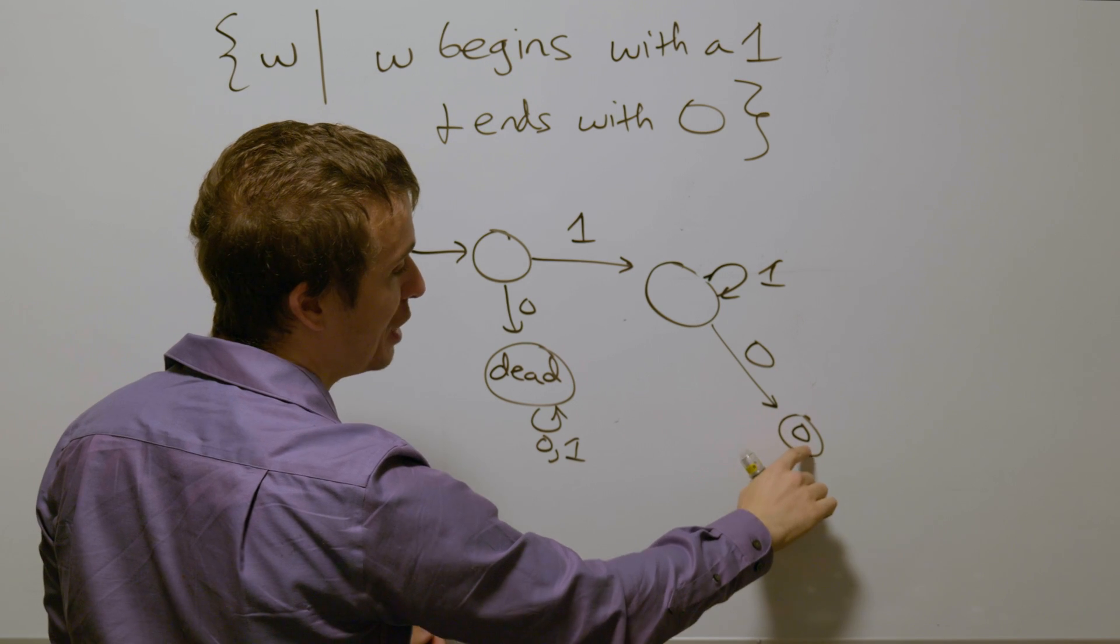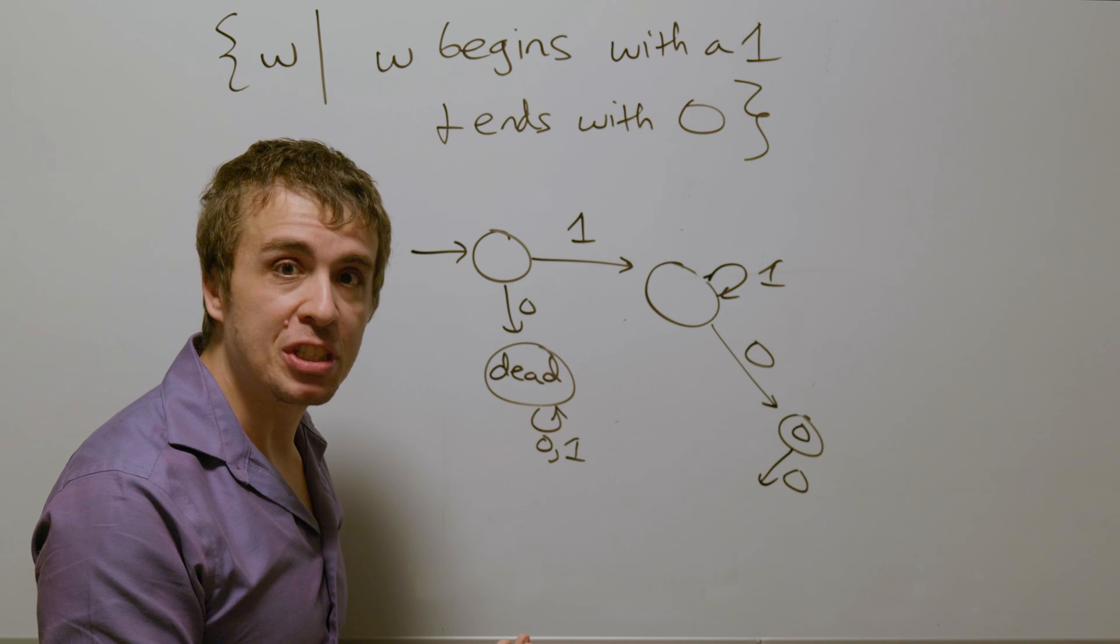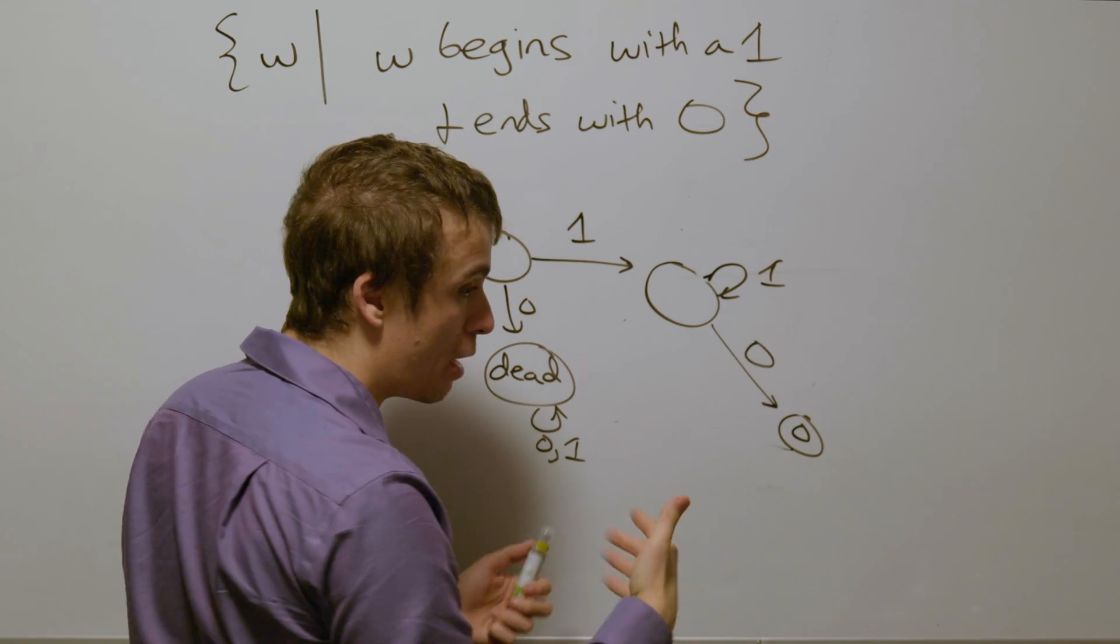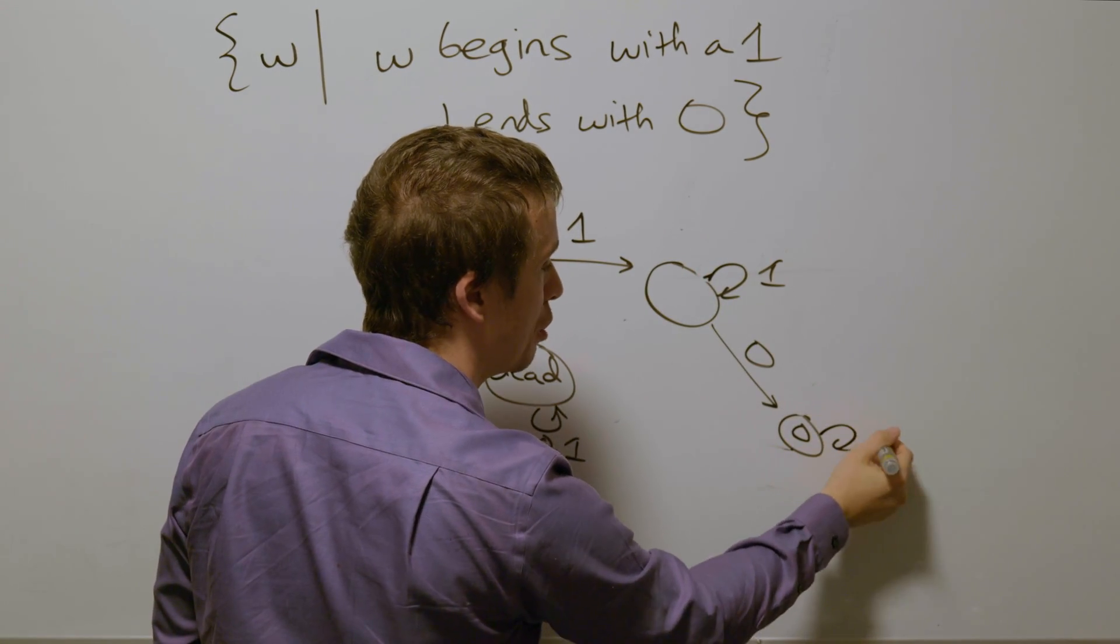But then from this state, if we read a zero, that's still the last zero that we've ever seen. And so we should be accepting at this point. And no matter how many zeros we see, it still ends with a zero. So therefore we need to stay in this state.